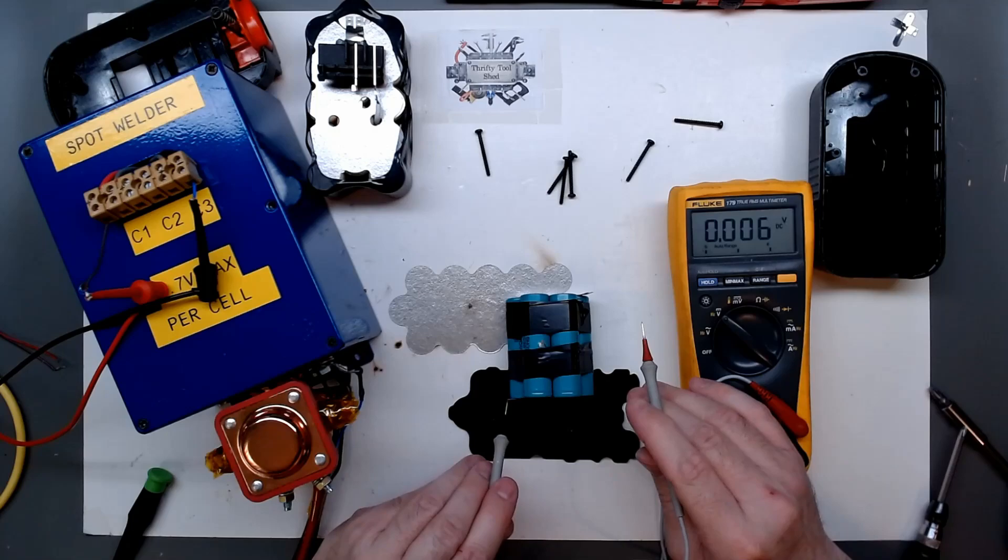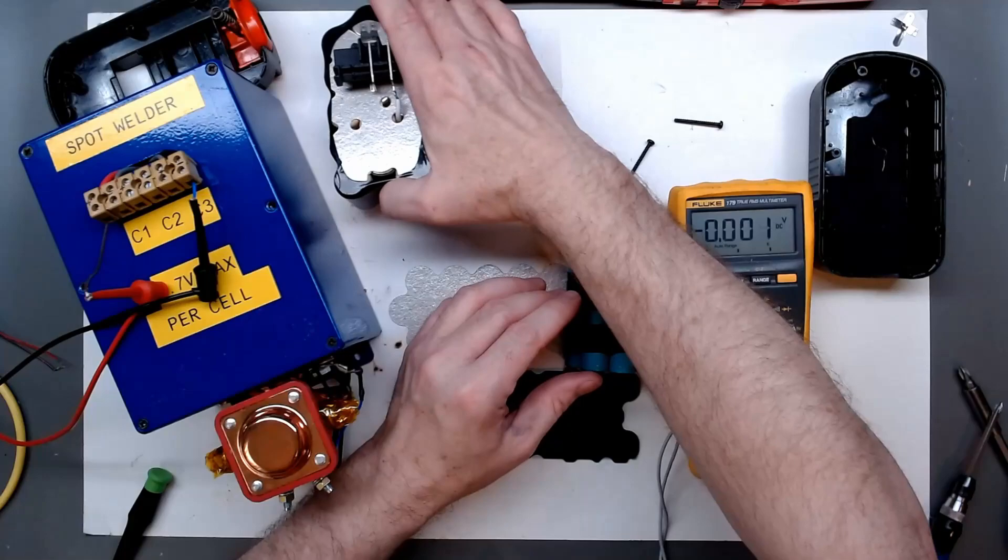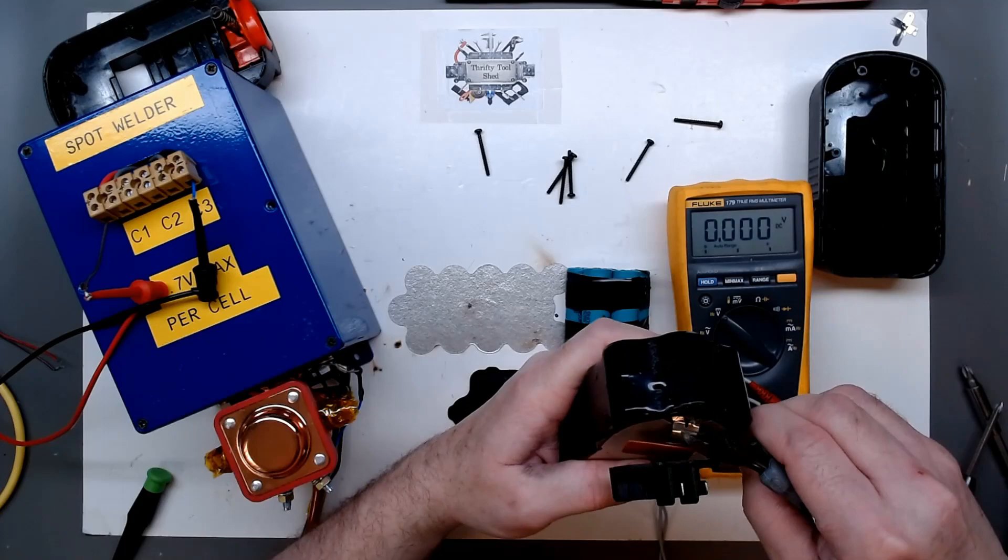It'll fit in the case very easily. So if we check it, we should have our 20 volts, 20.25 volts. So now, we'll take this apart and make the connector work.